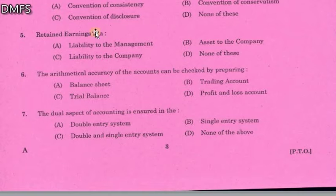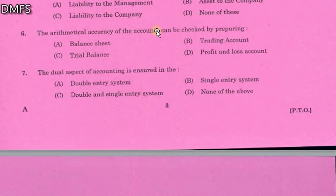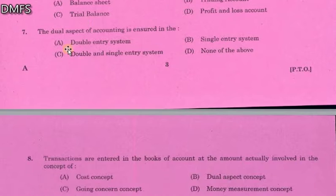To check the accounts, we use trial balance. For option C, trial balance — we can check the account using trial balance. The dual aspect of accounting is ensured in the double entry system — dual aspect of the double entry system.